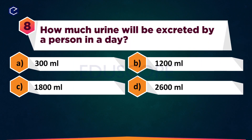How much urine will be excreted by a person in a day? A: 300 ml, B: 1200 ml, C: 1800 ml, D: 2600 ml.